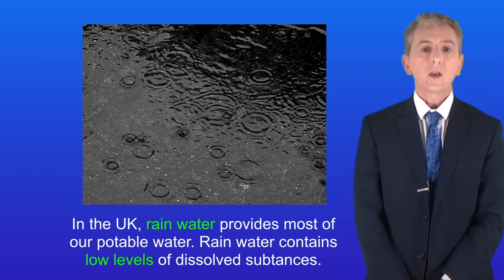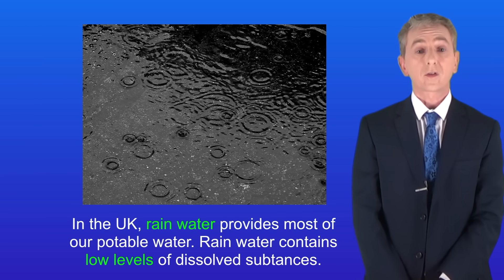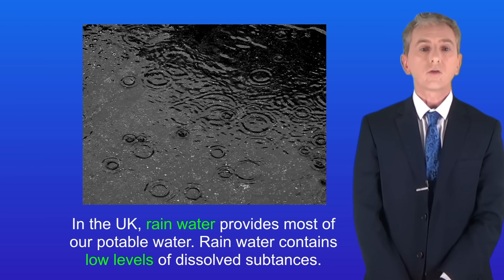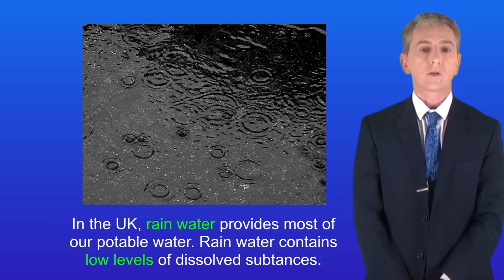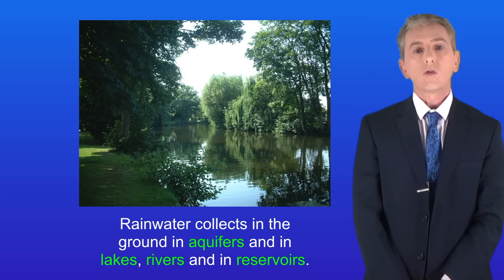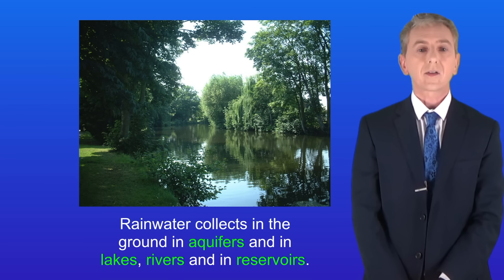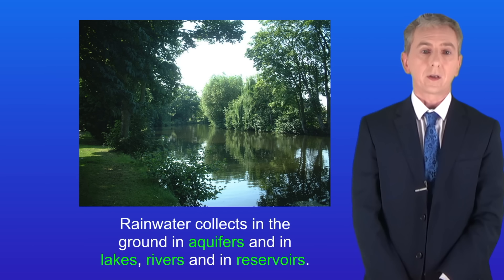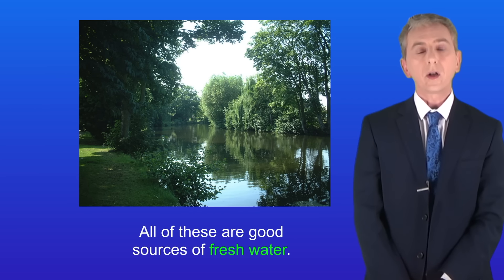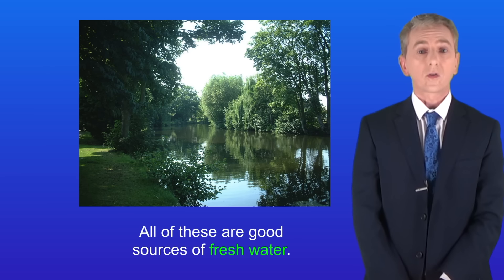In the UK, rainwater provides most of our potable water because rainwater contains low levels of dissolved substances. Rainwater collects in the ground in aquifers and also in lakes, rivers, and in reservoirs, so all of these are good sources of fresh water.